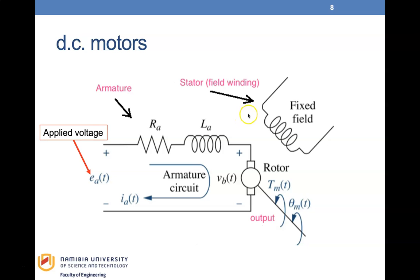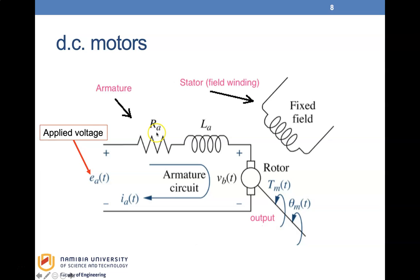This is the DC motor arrangement. The armature circuit is the part that actually rotates, and there is a shaft connected to it. From that shaft you have your rotor, and the output can make use of the torque generated by the motor to drive any other machine — a pump, a toy, a car. The applied voltage drives through the armature resistor and armature inductance, and the fixed field (the stator/field winding) is also shown. The voltage Vb here is the back electromotive force produced by this winding.